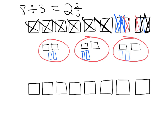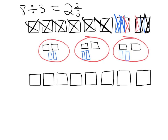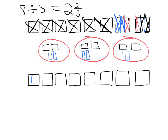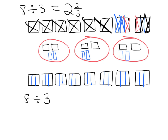Now another way we can think of this is we can start by taking these 8 cookies and immediately cut them into thirds — all of them, cut them into thirds. So I'm going to rewrite this. When we have 8 divided by 3, we can think of this as 24 thirds divided by 3. So instead of thinking of this as 8 wholes, I can think of it as 24 thirds.